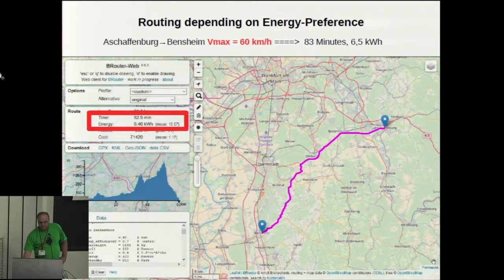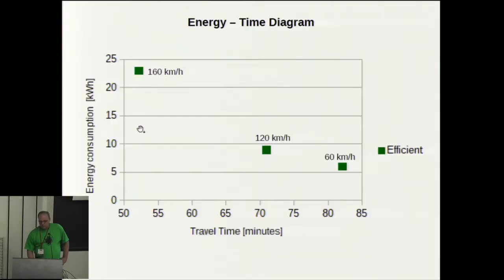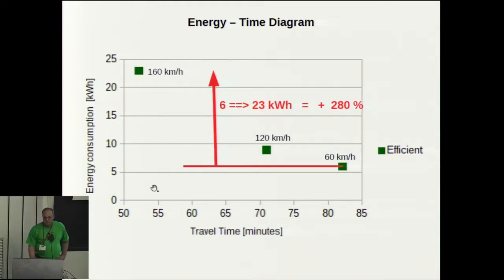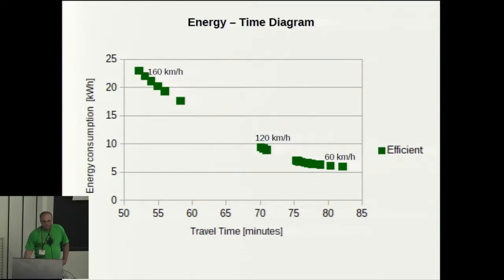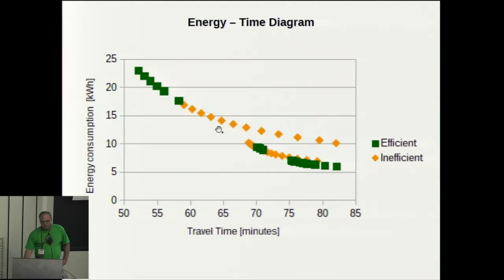Looking at the results for time and energy in a time-energy diagram, there is a huge variation in energy consumption but only a smaller variation in travel time. The energy variation is almost a factor of four. Adding more nominal speeds to this diagram shows three routing options and a convex slope defining the efficient border of the solution space. There are of course more solutions in this space which are not efficient — for example, taking the motorway routing but using it at low speeds.